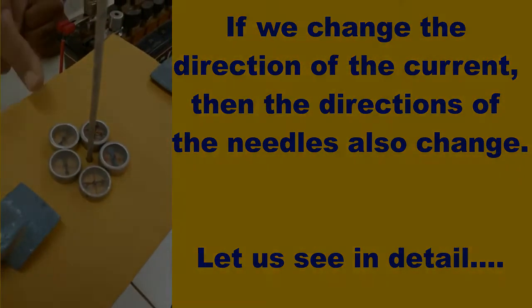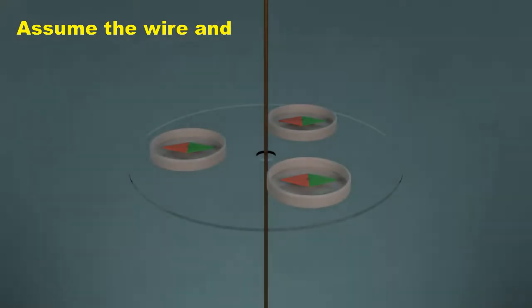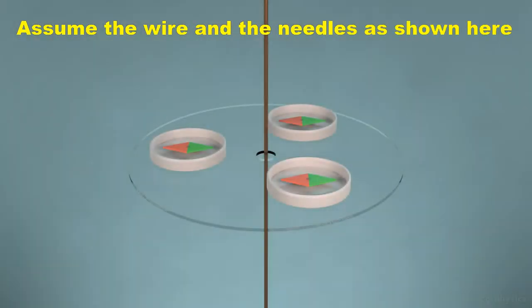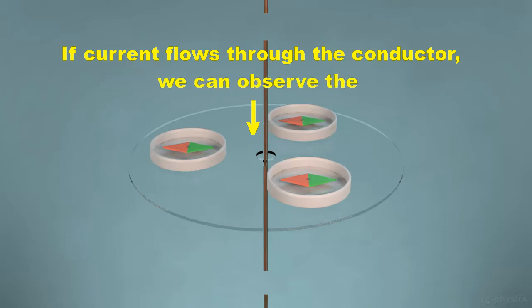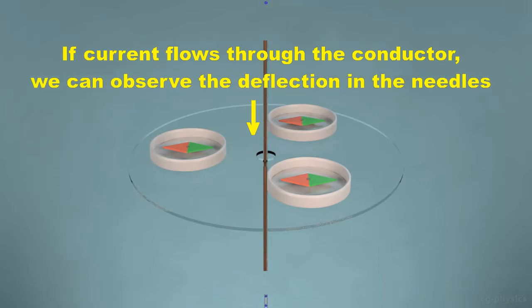Let us see in detail. Assume the wire and the needles as shown here. If current flows through the conductor, we can observe the deflection in the needles. Current is flowing. The needles are deflected.